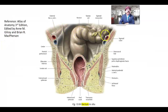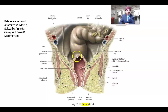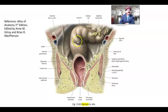Here we are seeing the sigmoid colon; from where it ends, the rectum begins, extending to the anorectal ring. The sigmoid colon has taeniae coli; the rectum has no taeniae coli and no appendices epiploicae. By the side of the rectum, we get the fatty tissue in the ischiorectal fossa.